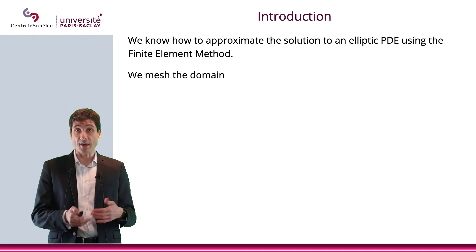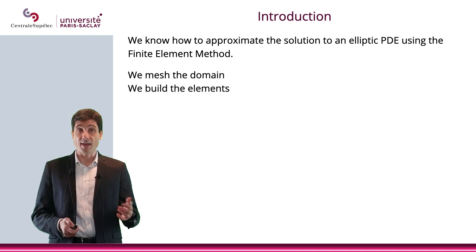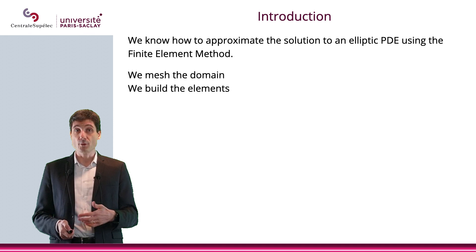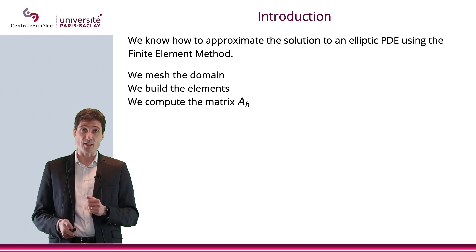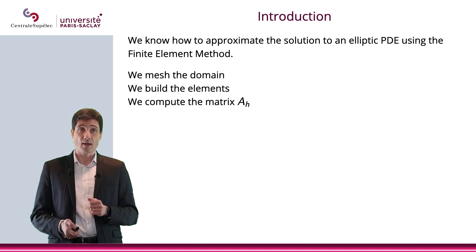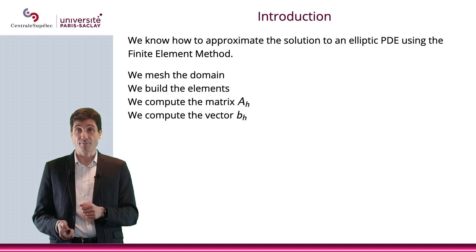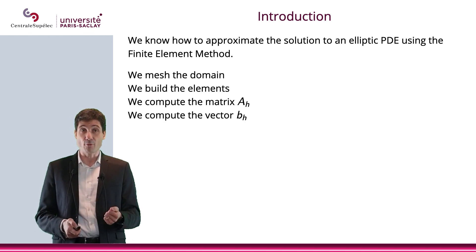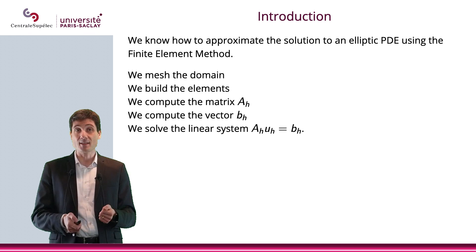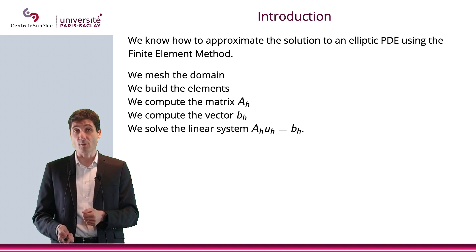First, we mesh the domain. Then, we build the elements. Then, we compute the matrix AH, which is called the rigidity matrix. And then we compute the vectors BH. At this point, we solve the linear system AH * UH = BH.